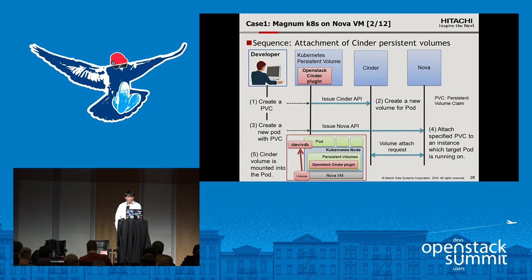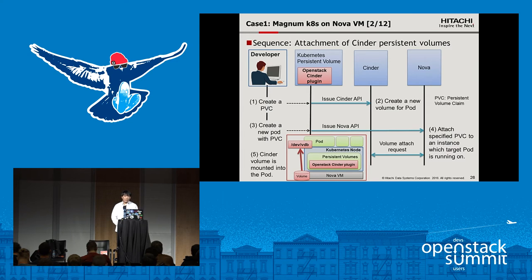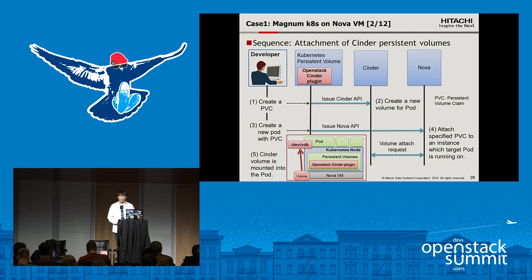Let me explain the attach sequence in more detail. To use a persistent volume from Cinder, first the developer creates a persistent volume claim. After issuing PVC creation, Kubernetes persistent volume calls the Cinder API and Cinder creates a new volume for the pod. Then the developer creates a new pod with the persistent volume claim. Kubernetes persistent volume calls the Nova API, and Nova attaches the specified persistent volume to the instance the target pod is running on. The Cinder volume is attached to the Nova instance, and if the volume has no file system, it is automatically formatted and mounted into the pod.